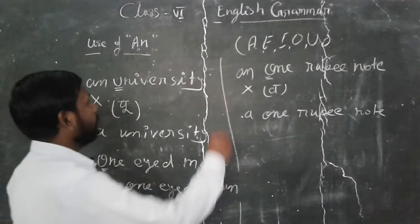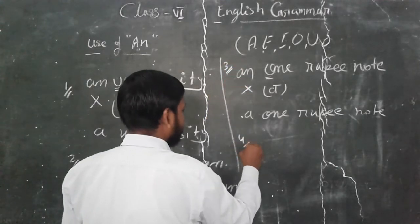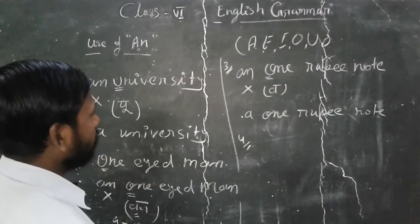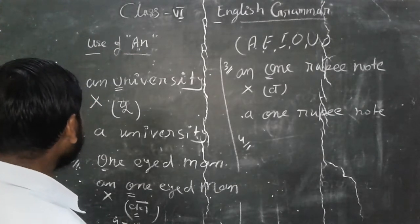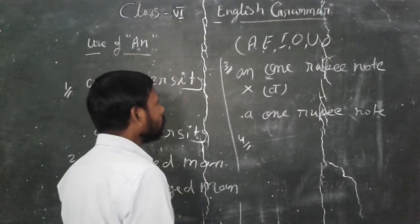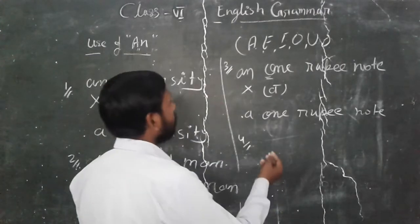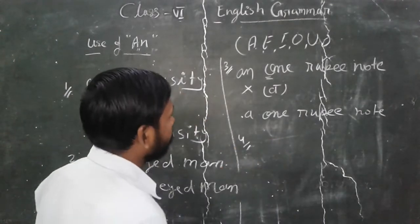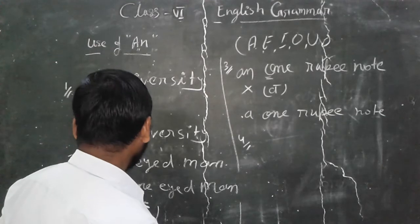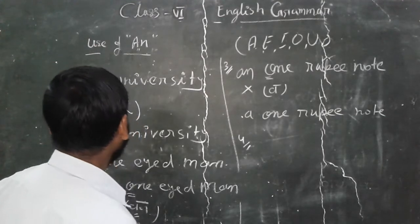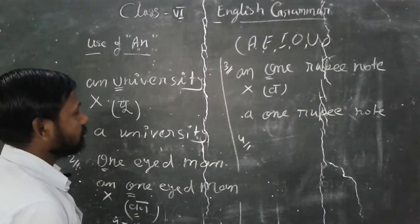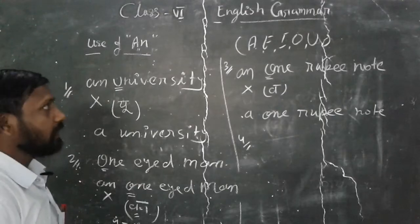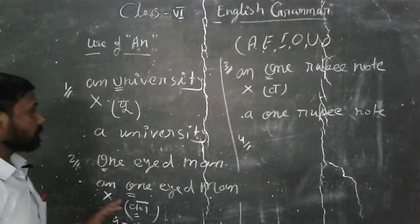Similarly, 'one rupee note' — you might say 'o' is here so use 'an,' but it is wrong because 'one' has a Hindi consonant sound, so it is 'a one rupee note.' Another example is 'European' — the sound is 'yu,' a Hindi consonant sound, so it is 'a European.' These examples — a one rupee note, a one-eyed man, a university, an honest — should be enough.